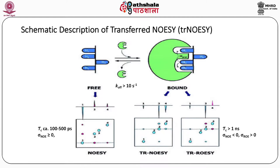A schematic description of transferred NOEs is provided in the figure. In blue you have the small molecule and in green the macromolecule, with their on and off rates shown. The off rate koff should be greater than 10 s⁻¹. When the small molecule is free, the NOESY spectrum shows diagonal peaks and cross peaks with a phase opposite to the diagonal. In transfer NOEs, the conformation of the molecule changes and there is a change in the phase of the NOE peaks. Transfer ROEs can also be recorded in transfer ROESY experiments.